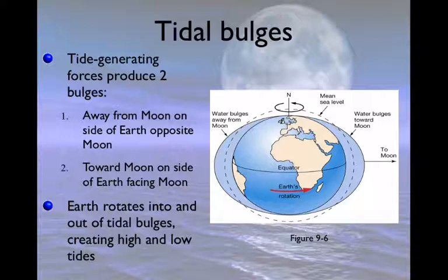tidal bulges. And the one closest to the Moon, which we can see right here, is primarily due to gravity. And the one over here, which is the harder one to explain, for the purpose of this class we're going to say it's mostly due to inertia or centrifugal force.